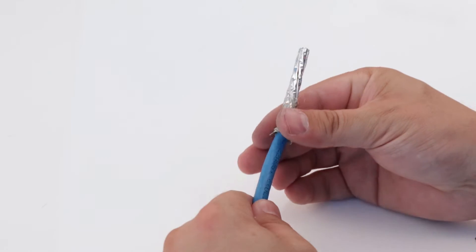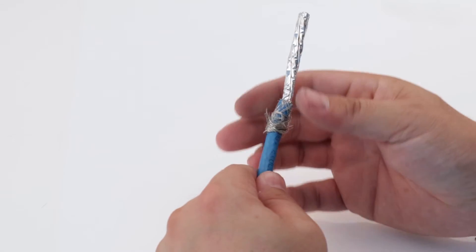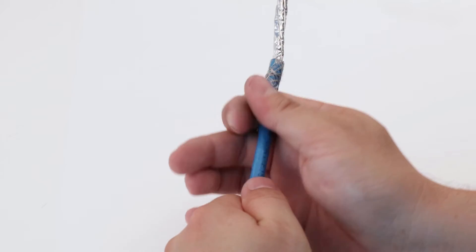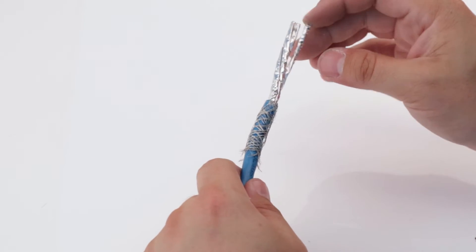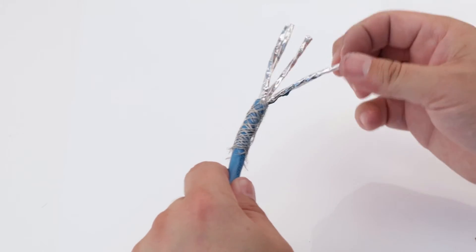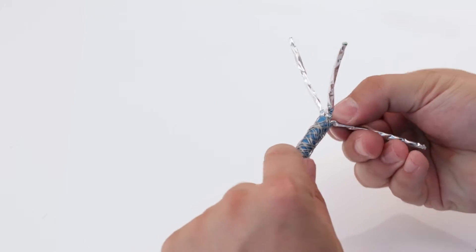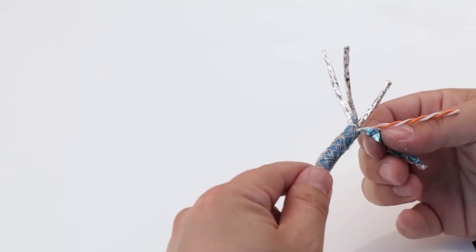Fold back the braided shield so that it lies over the cable jacket. Remove the foil shield from each of the four twisted pairs.